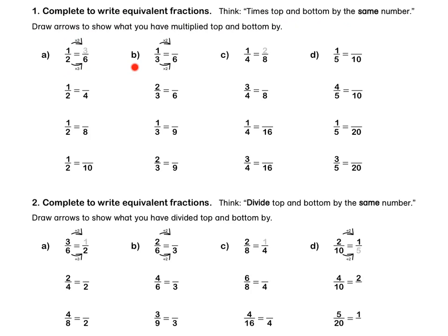Let's look at B. 3 times 2 is 6, and 1 times 2 is 2. Therefore, 1 third is 2 sixths. Let's look at the next question: 3 times 2 is 6, so at the top, 2 times 2 is 4.